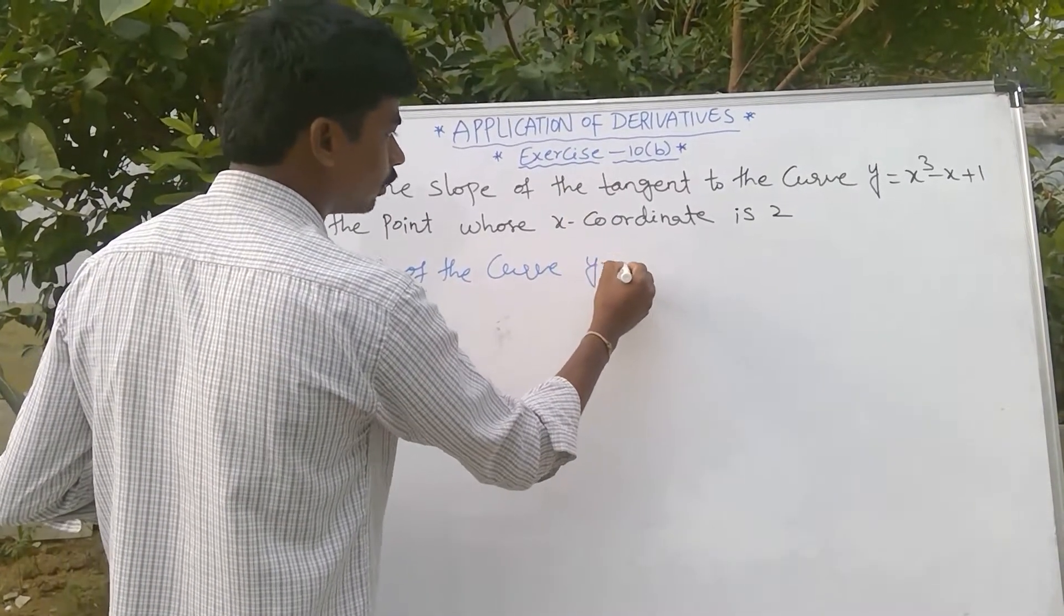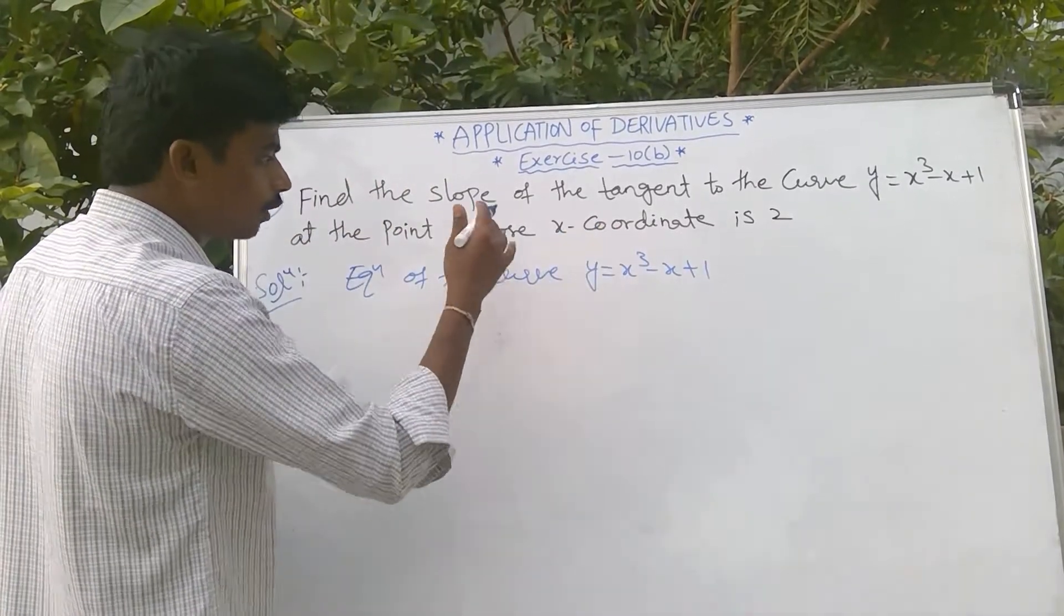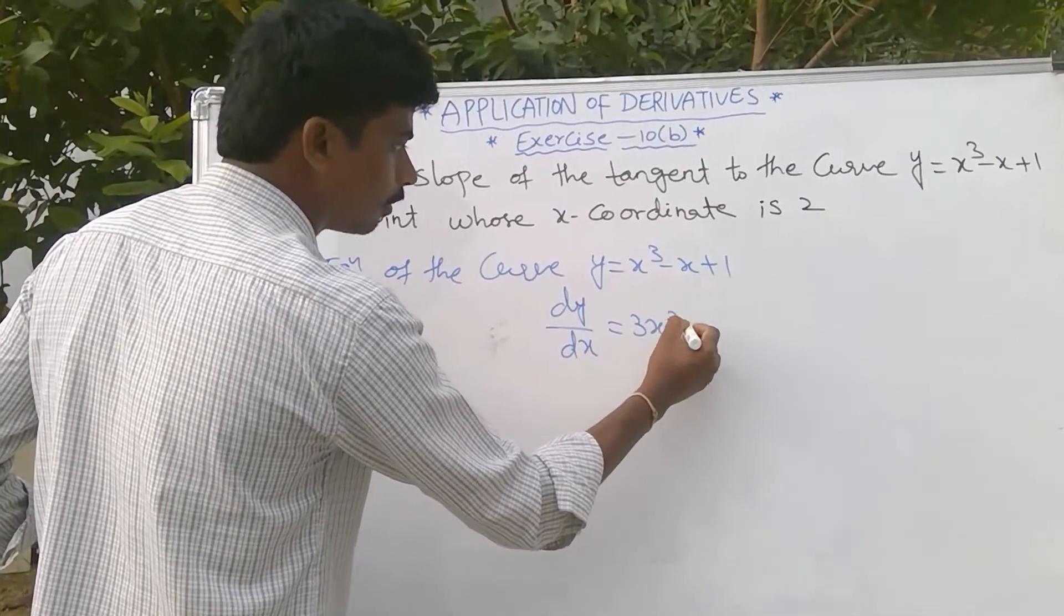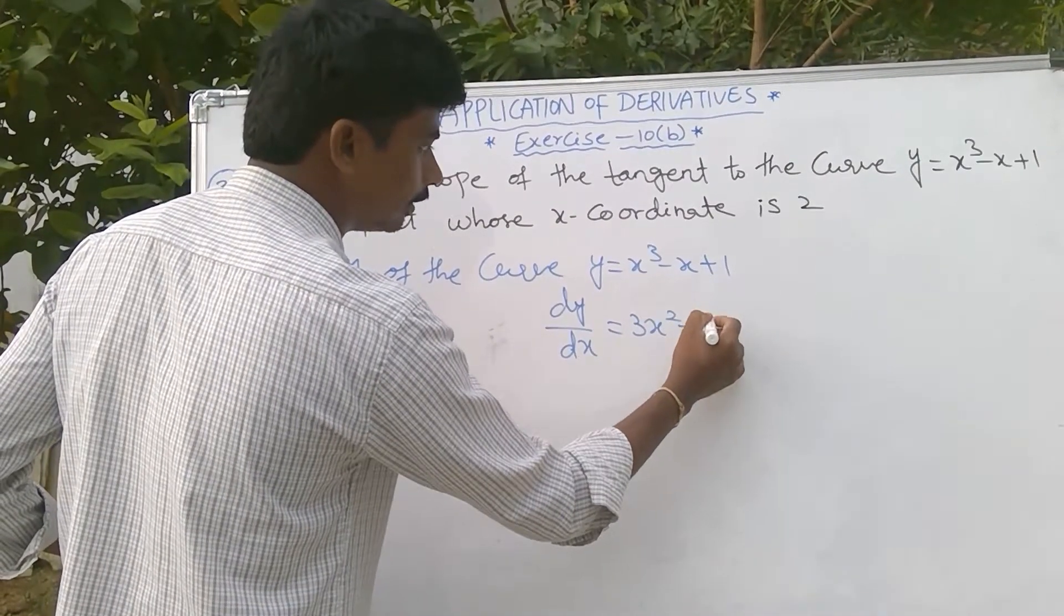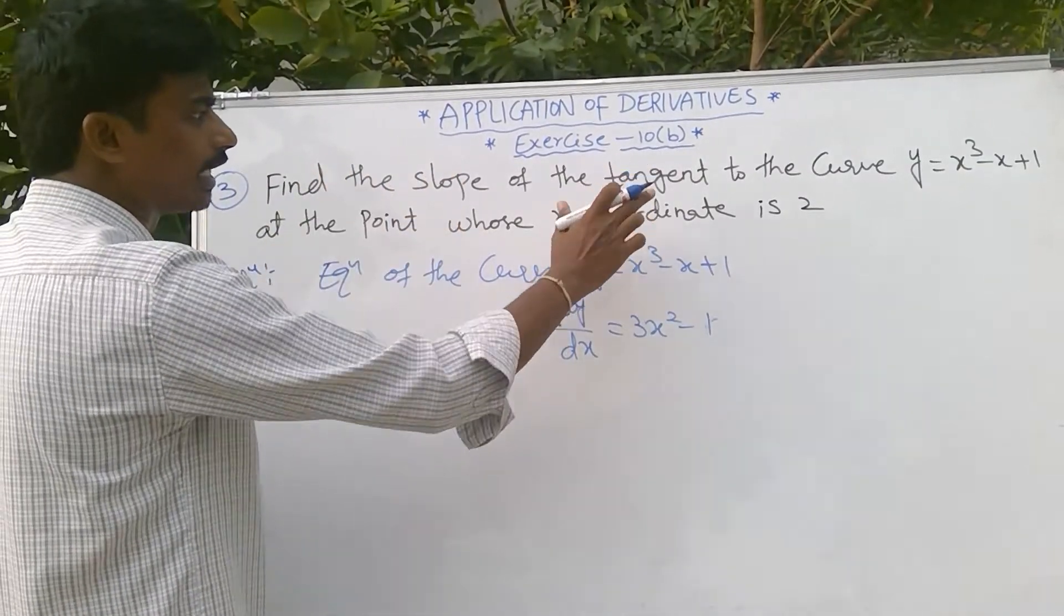Now derivative with respect to x: dy/dx = 3x² - 1. Now slope of the tangent...